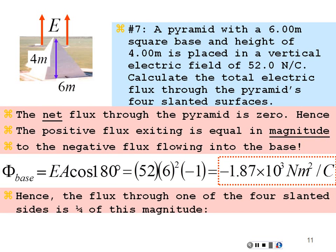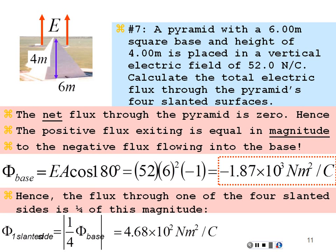There is no set unit for electric flux in the SI system — it is newton·meter squared per coulomb. This is the total flux going into the base. What's coming out through the four slanted sides should be the positive magnitude of this. By symmetry, there's no reason why one slanted side would have more flux than another, so the flux through one slanted side is one-fourth of the total flux: one-fourth of 1.87 times 10 to the 3, which is 4.68 times 10 to the 2 newton·meter squared per coulomb.